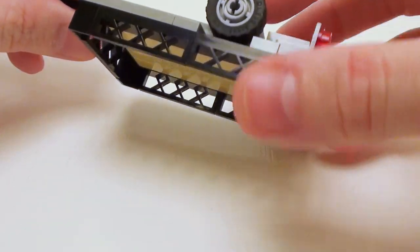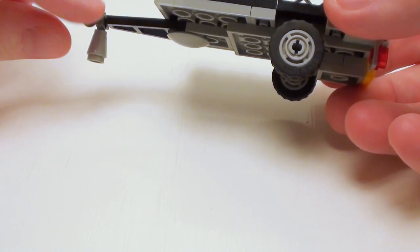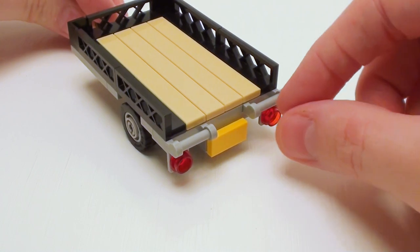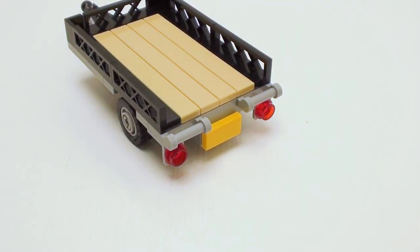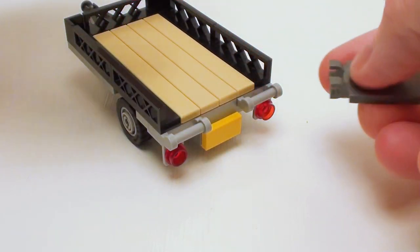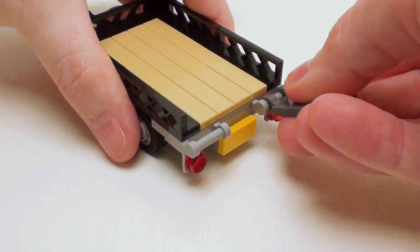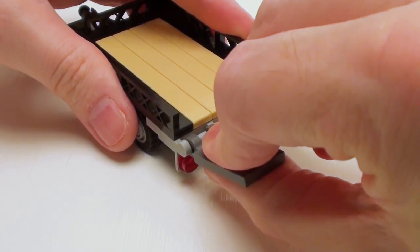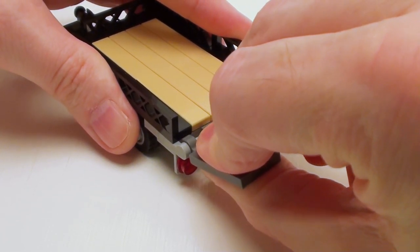Now let's flip the trailer assembly back over. Make sure you have your stand down because we need to level this off so we can attach our access. Let's start with a pair of 2 by 3 modified tiles with clips. We're going to place one on the right-hand side and one on the left-hand side right on the plates with stick.